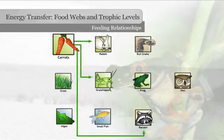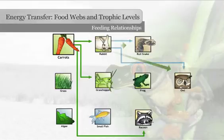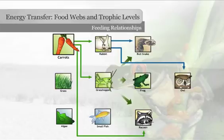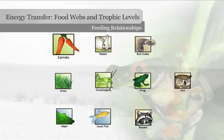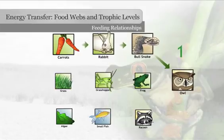But rabbits support snakes and owls. Grasshoppers support frogs, snakes and raccoons, which are all eaten by owls. That means that carrots are part of at least four different food chains.